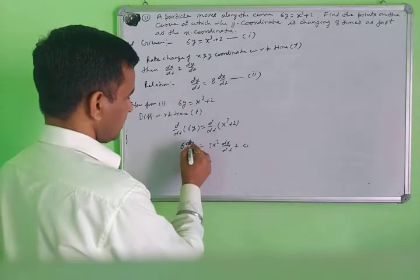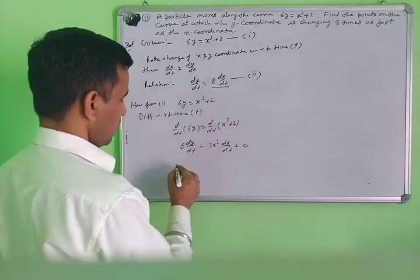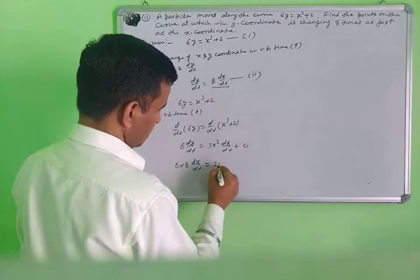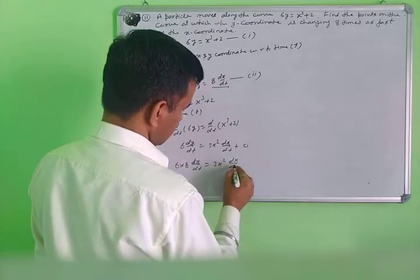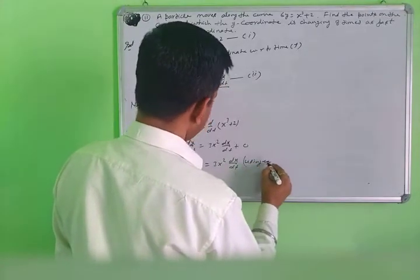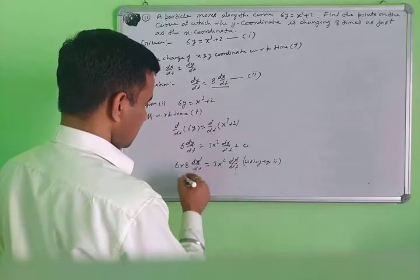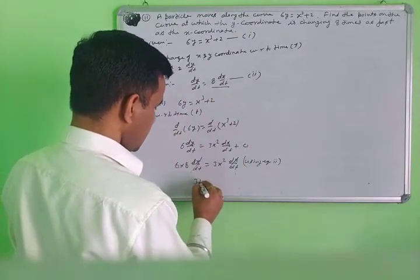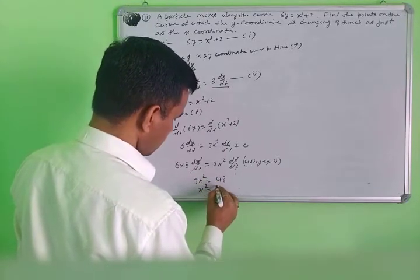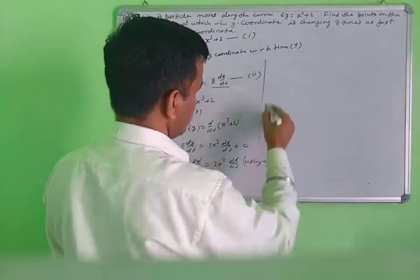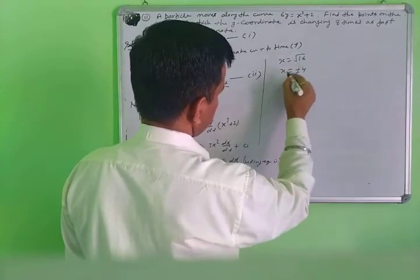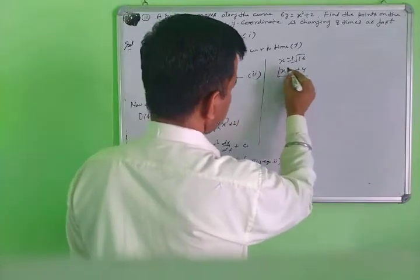Now putting the condition dy over dt equals dx over dt. So 6 times dx over dt equals 3x squared times dx over dt. Dividing both sides, we get 3x squared equals 6, so x squared equals 16 — wait, 6 into 8 divided by 16. Then 3x squared equals 48, x squared equals 16, and x equals plus or minus 4.